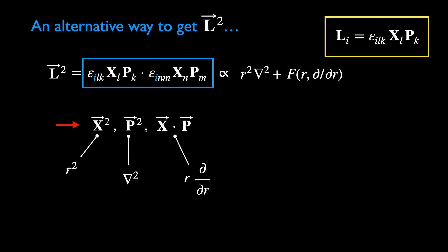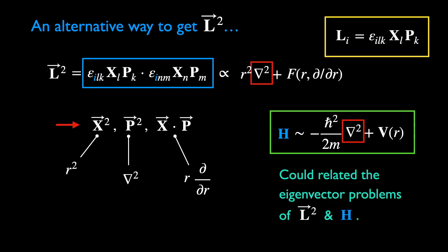Recall that the Hamiltonian in position space is the one given in the green box, which is just the kinetic energy term plus an r-dependent central potential. There is also a Laplacian coming from the kinetic energy term in the Hamiltonian. We can use this to connect L-square to H with the remaining functions dependent only on r. This allows us to relate the eigenvector problems of both operators in a simple way.